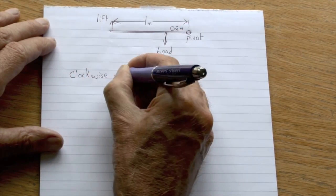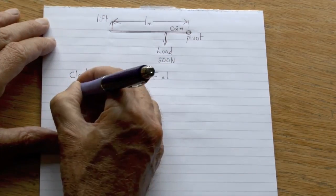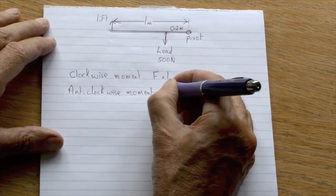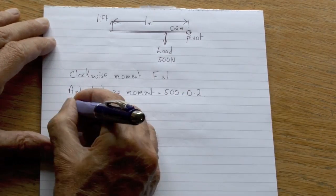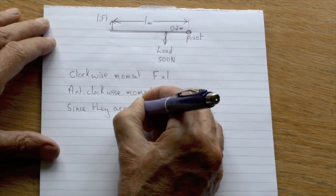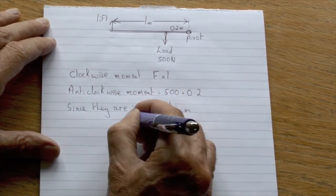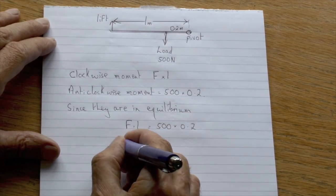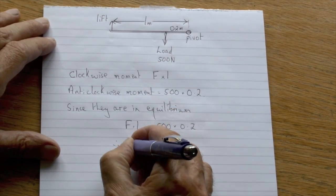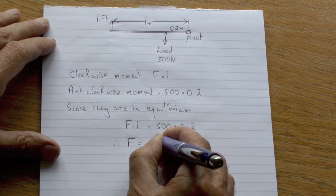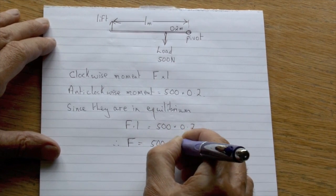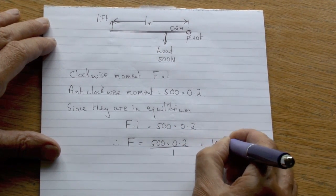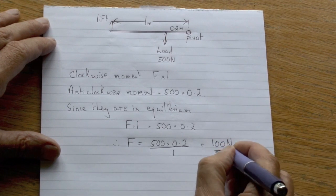The clockwise moment is the value of the force of the lift multiplied by one metre. The anti-clockwise moment is the load, 500 newtons, times 0.2 metres. Since these two are balanced and in equilibrium, they must be equal. So the force times 1 equals 500 times 0.2, giving the force as 100 newtons.